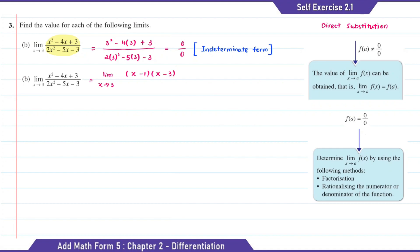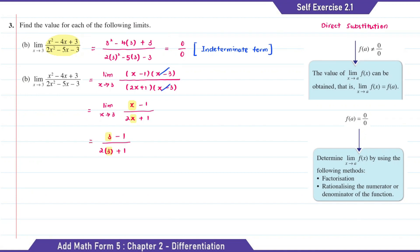As for the denominator part, the answer will be (2x plus 1)(x minus 3). So here we can cancel the x minus 3. So now when we substitute x with 3, the answer is equal to 2 over 7.